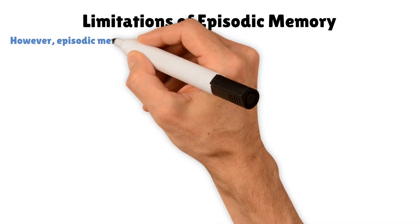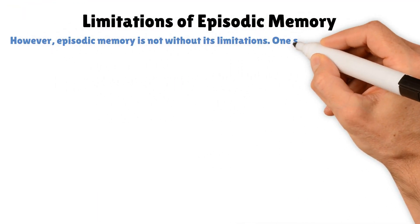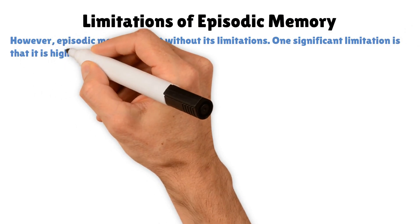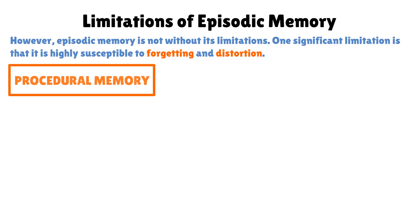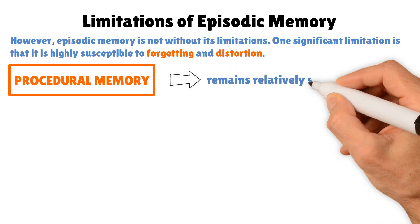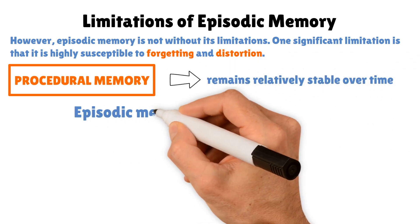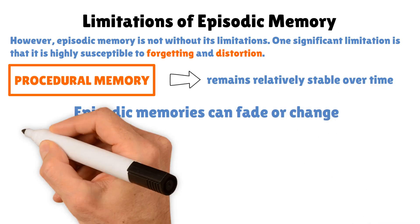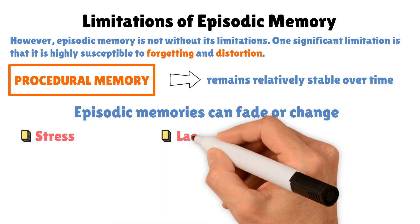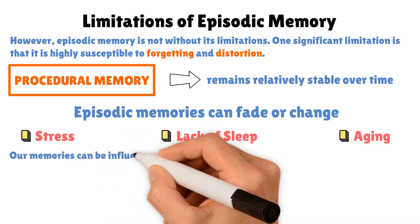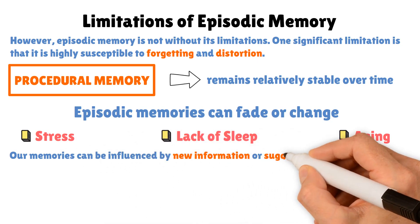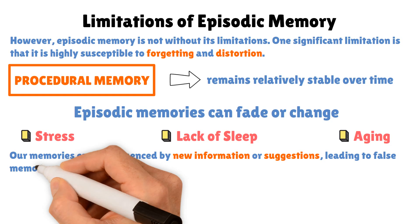However, episodic memory is not without its limitations. One significant limitation is that it is highly susceptible to forgetting and distortion. Unlike procedural memory, which remains relatively stable over time, episodic memories can fade or change. Factors such as stress, lack of sleep, and aging can negatively impact our ability to recall episodic memories accurately. Additionally, our memories can be influenced by new information or suggestions, leading to false memories.